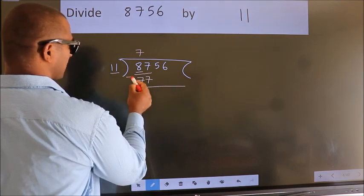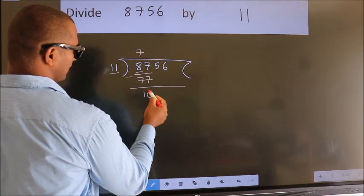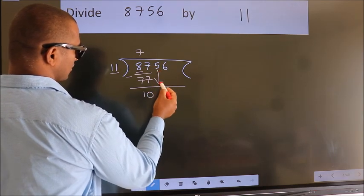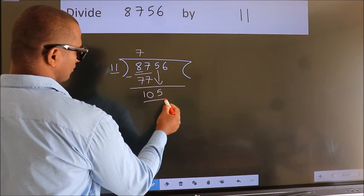Now we should subtract. We get 10. After this, bring down the next number. So, 5 down, giving us 105.